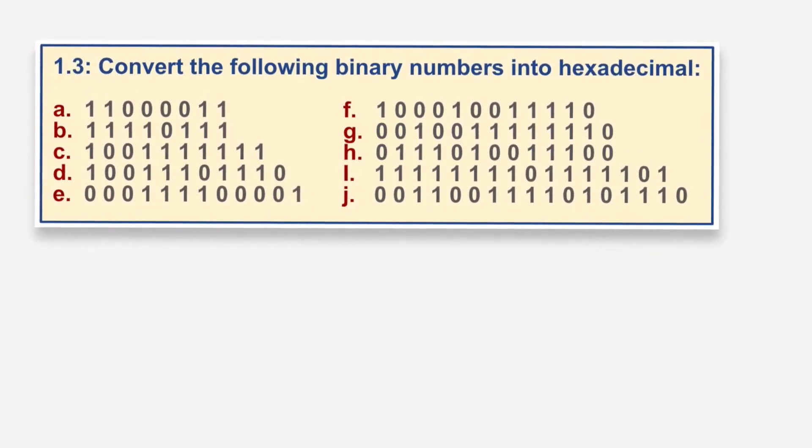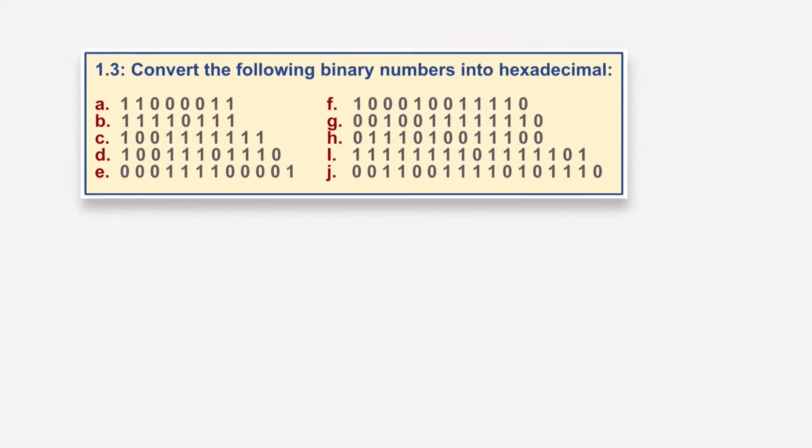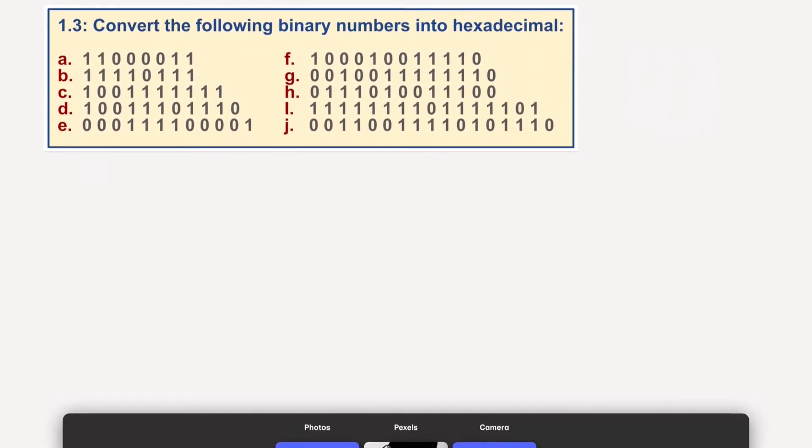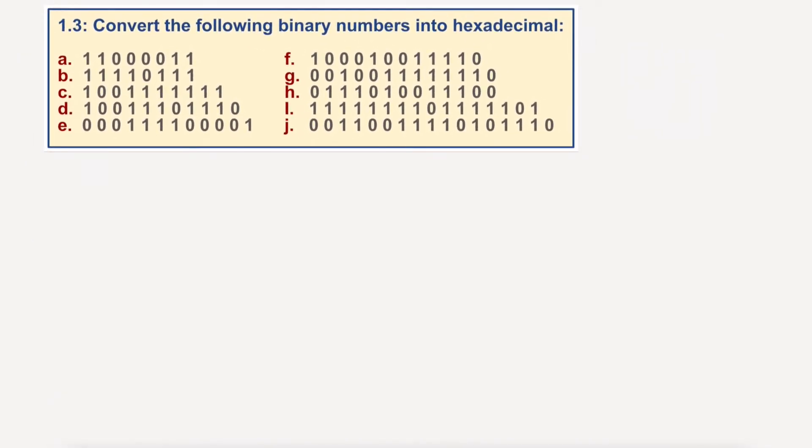So we'll do the first one, I'll do the last one, and then I'll put the answers on screen. Okay, so move that out of the way, grab a pen. So we're going to write these first numbers down. We've got 1, 1, 0, 0, 0, 0, 1, 1. Okay, and we're converting binary into hexadecimal.